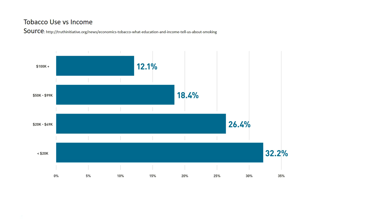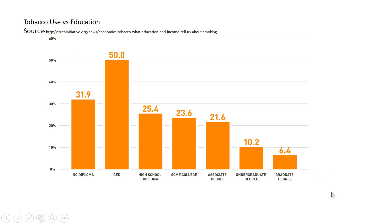This graph shows tobacco use as a function of income — those who make the most money are less likely to smoke. And looking at tobacco smoking as a function of education, those with a university level education are much less likely to smoke than those with only a high school or community college education. Those who struggled to get even a high school education are profoundly more likely to smoke.